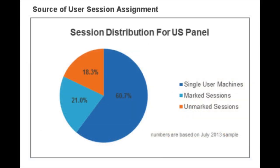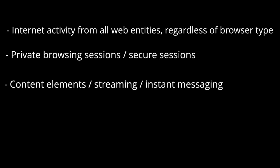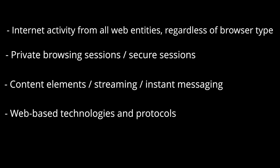The panel measurements comprise the Comscore rankings — a monthly list of the top 50 digital properties across the web, ranked by the number of unique visitors from highest to lowest. Who is in the panel is identified by Comscore as either home or work-based machines. These have to be personally owned by the panelist or household to qualify as home panelists, while computers owned by an employer qualify as work computers. The panel methodology can register unique visitors across internet activity from all web entities, regardless of browser type, private browsing sessions, secure sessions, content elements, streaming, instant messaging, and web-based technologies and protocols.